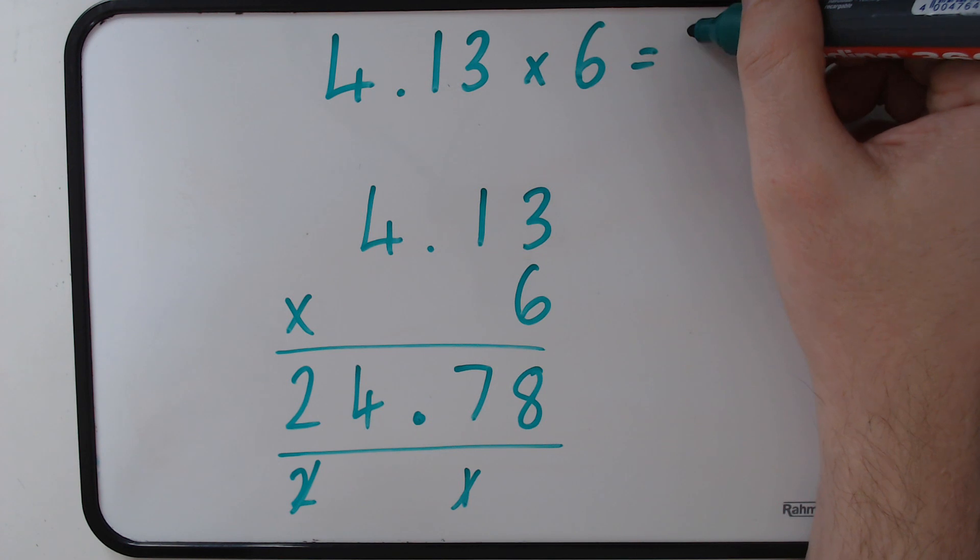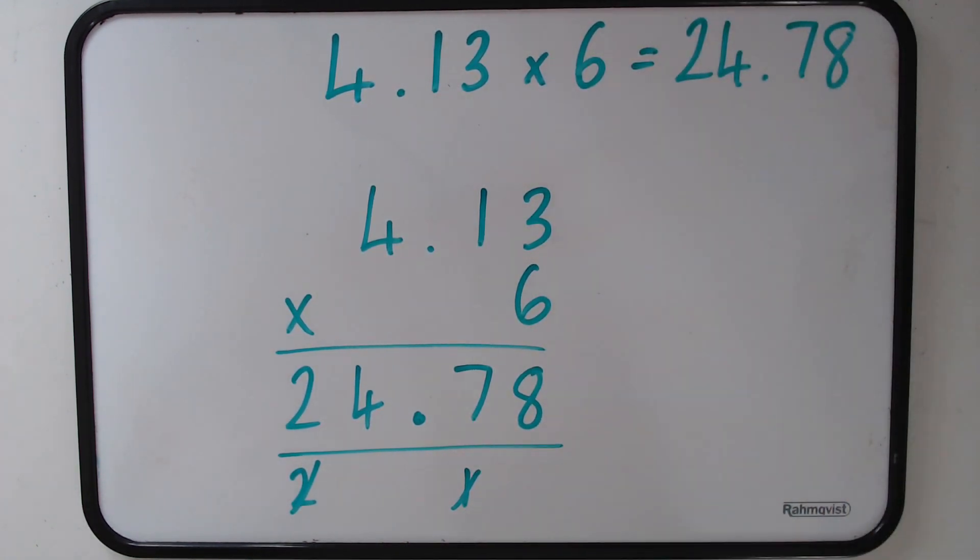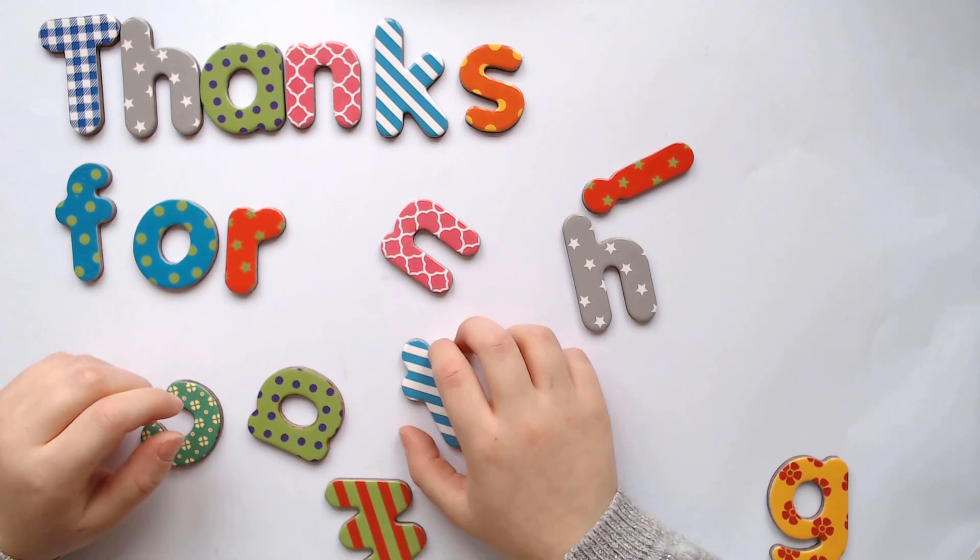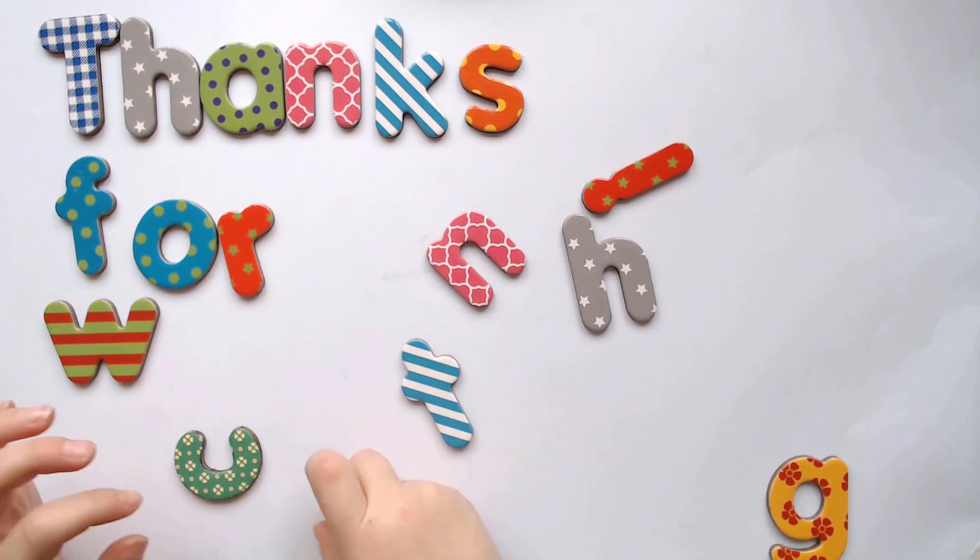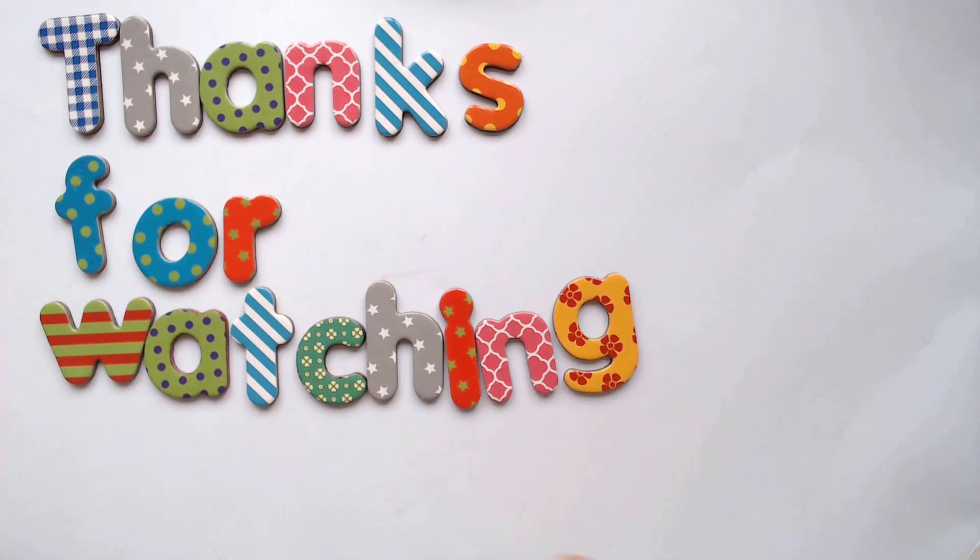In the next video, we're going to have a look at long multiplication, and that's where we times a number by a two-digit or a three-digit or higher. Thank you very much for watching. You can have a go at making your own questions at home and see if you can make any tricky ones. See if you can test some of those times tables – it's a bit harder, so times by 6, 7, 8.